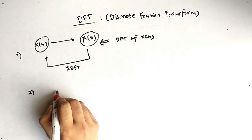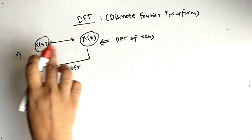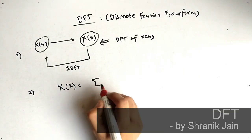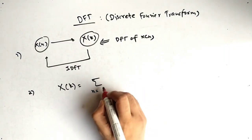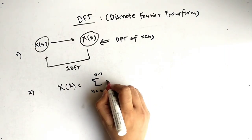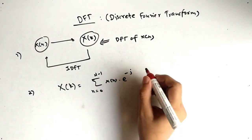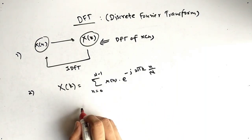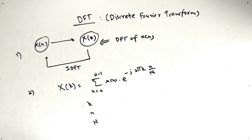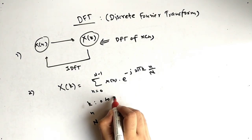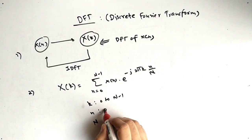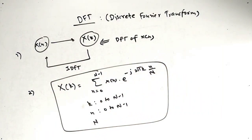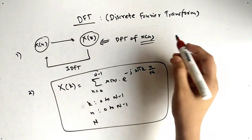The formula to find DFT: on the LHS we write capital X[k], and the formula is the summation from n equals 0 to N minus 1 of x[n] into e raised to minus j times 2 pi k n divided by capital N. Here k ranges from 0 to N minus 1, and n also ranges from 0 to N minus 1.